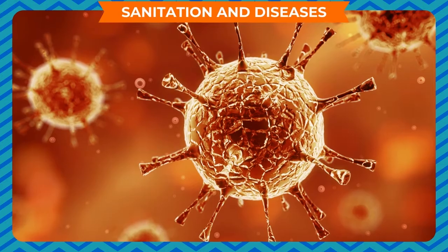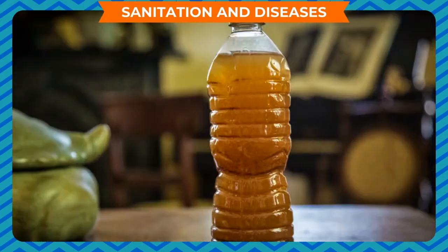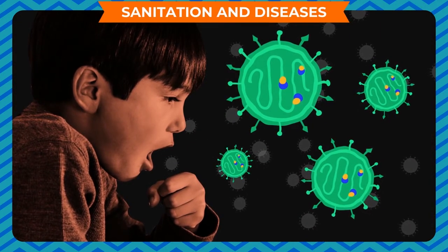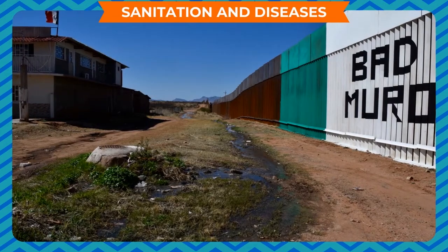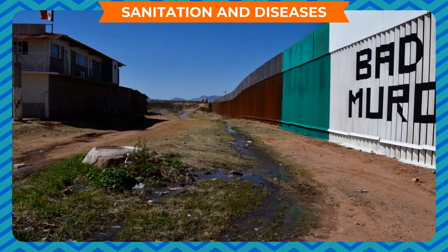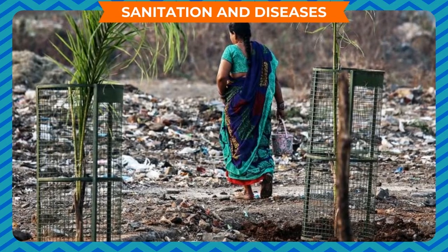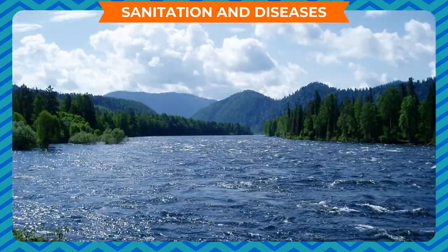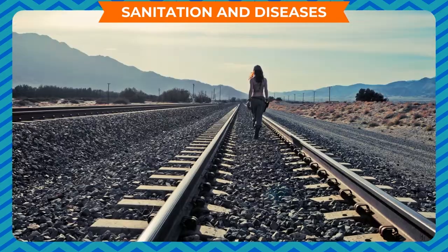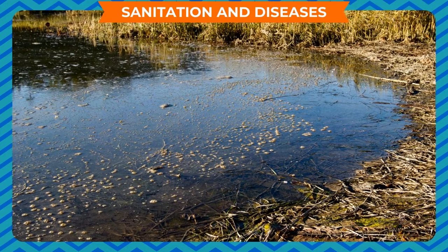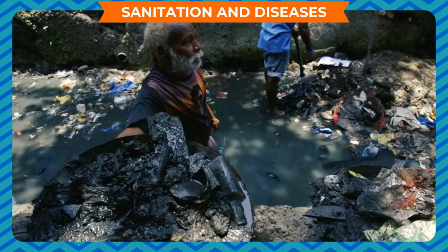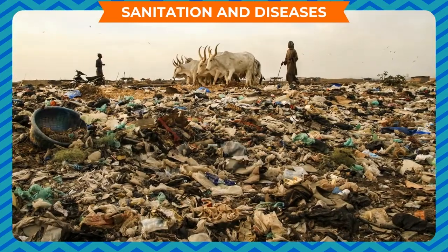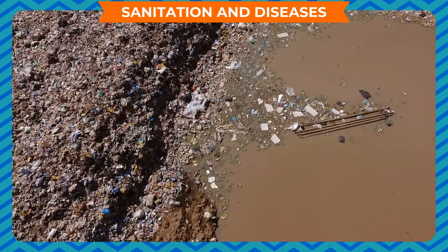Sanitation and Diseases: Poor sanitation and contaminated drinking water are the cause of a large number of diseases. A vast number of people in our country are still without sewerage facilities. A very large fraction defecates in the open — on dry riverbeds, on railway tracks, near fields, and many times directly in water. Untreated human excreta are a health hazard and may cause water pollution and soil pollution, affecting both surface water and groundwater.